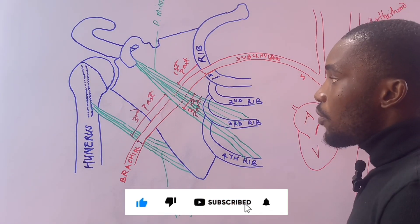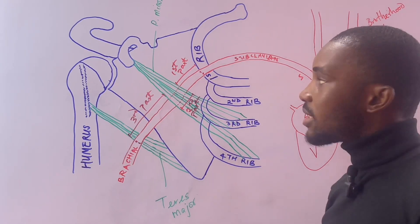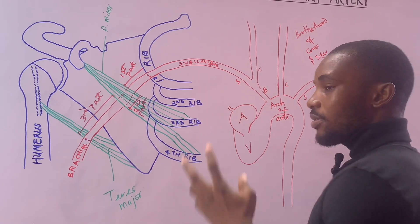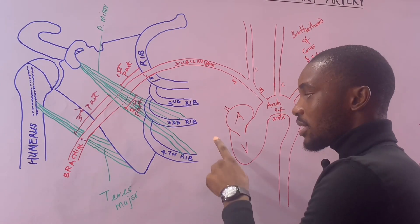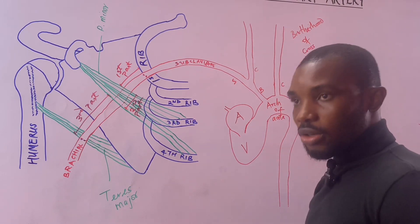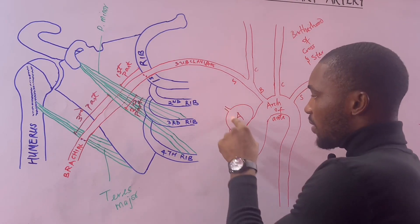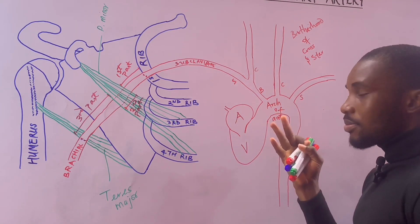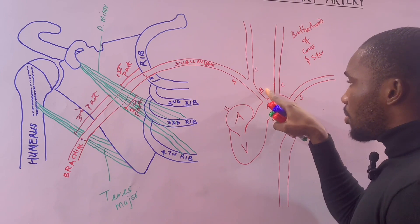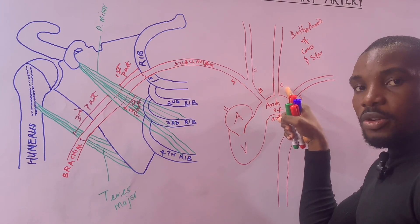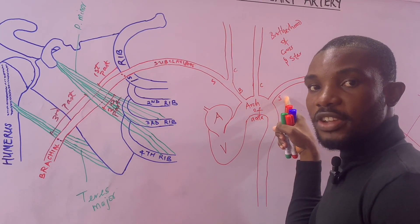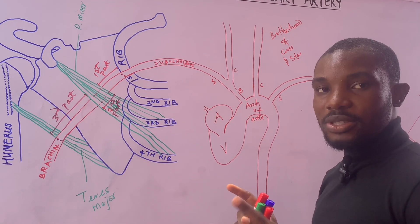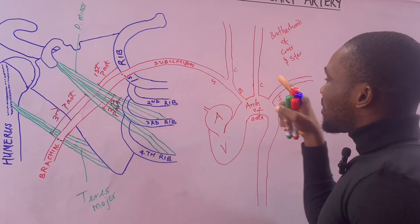As a brief recap: blood flows from the veins of the body via the superior and inferior vena cava into the right heart, goes to the lungs to be oxygenated, then the oxygenated blood comes to the left atrium, left ventricle, and into the arch of aorta. From the arch of aorta there are three branches: brachiocephalic, left common carotid, and left subclavian artery — remembered with the mnemonic 'Brotherhood of Cross and Star.'